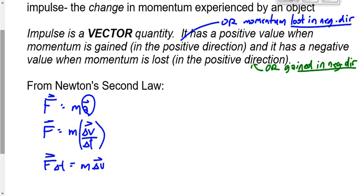What does M times ΔV mean? Delta means change, so ΔV means change in velocity. If M times V is momentum — and that's what we've spent the last two days talking about — then M times ΔV would be change in momentum, or in other words, the impulse. The symbol I use for impulse is ΔP. Next year in university you might see the symbol J, but I prefer ΔP because it defines impulse as change in momentum.